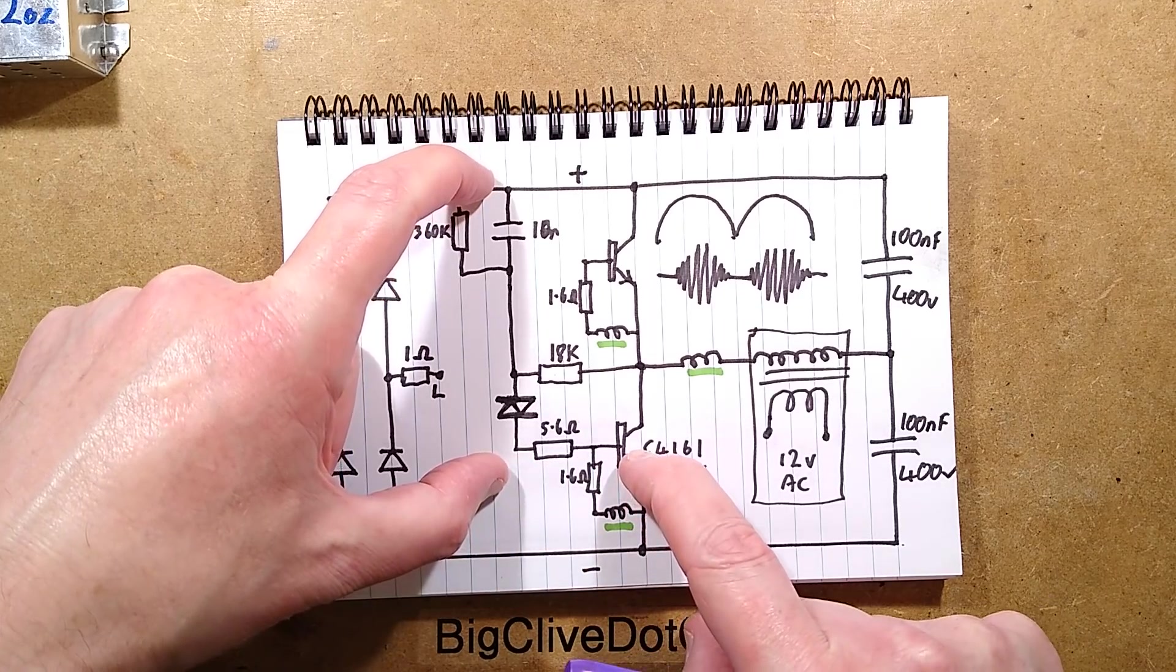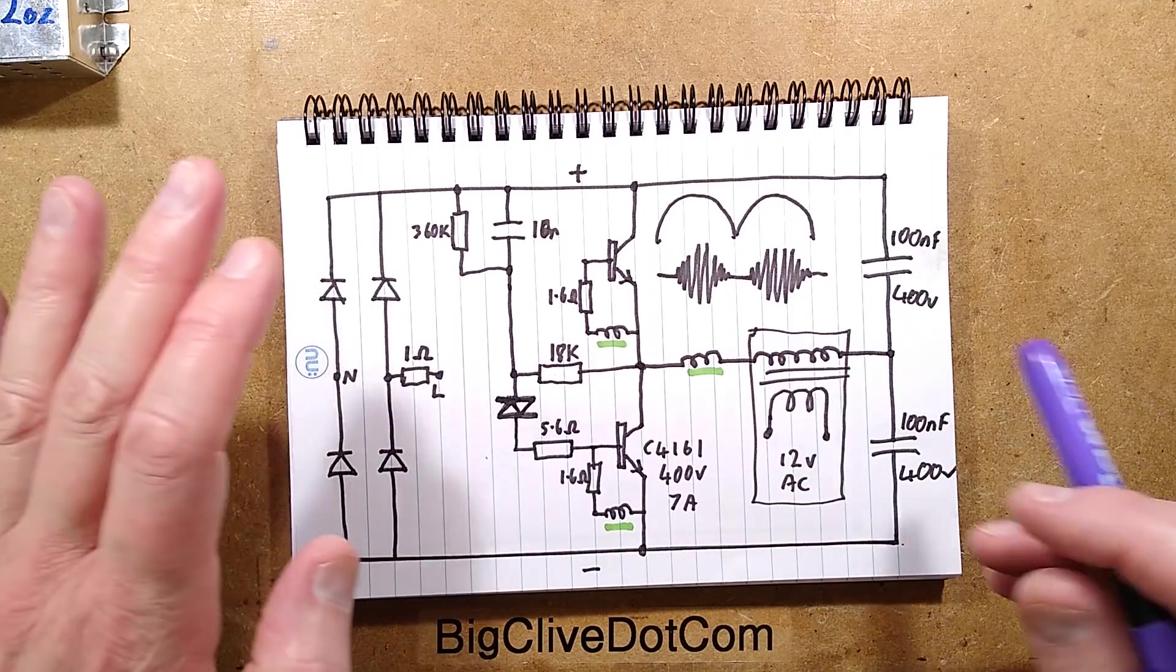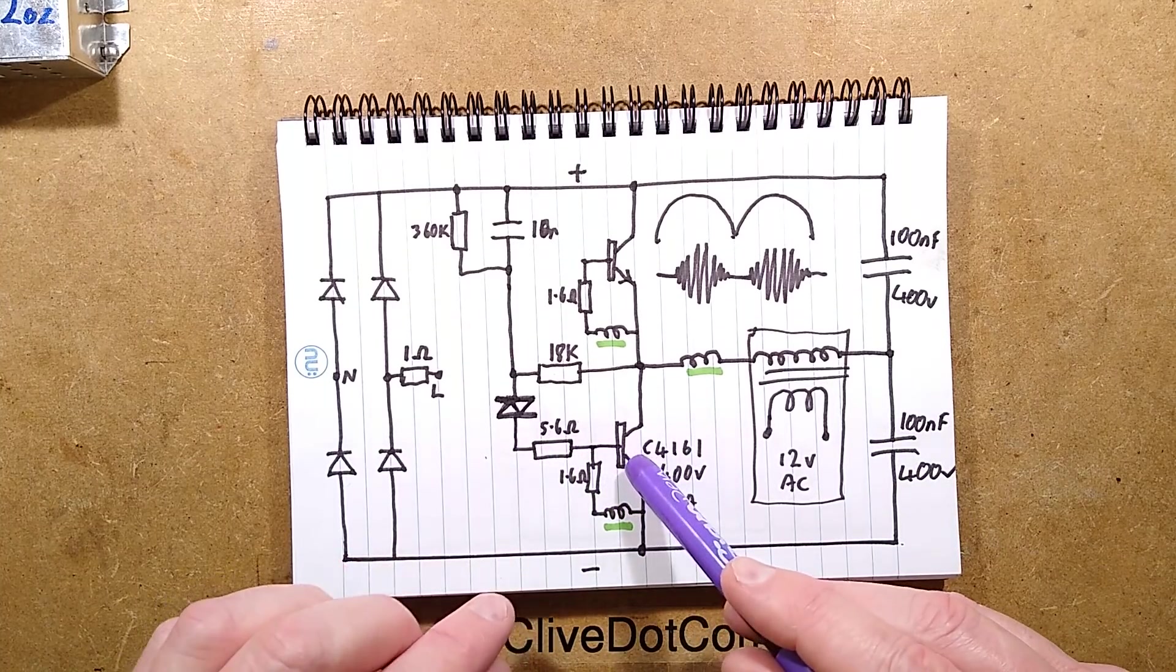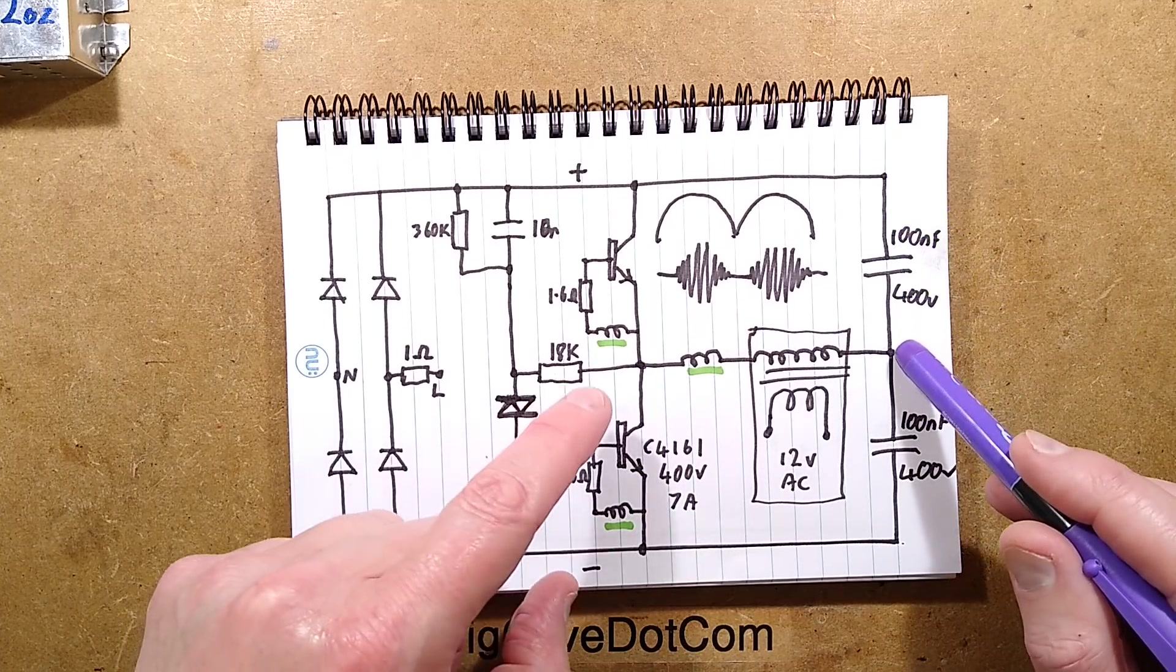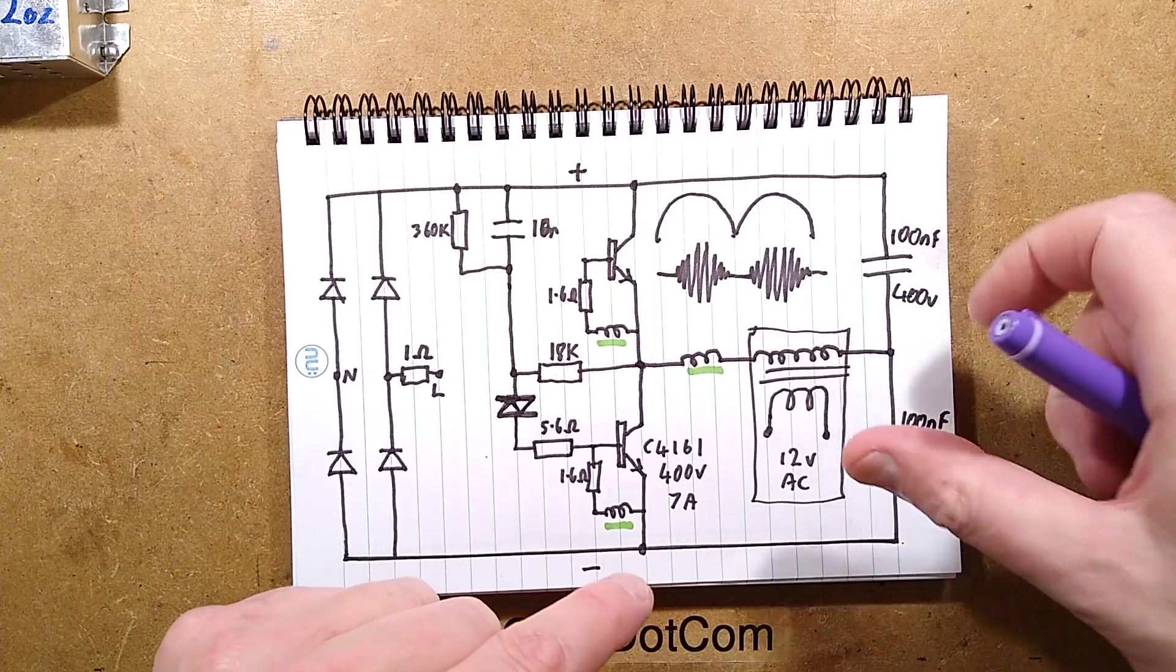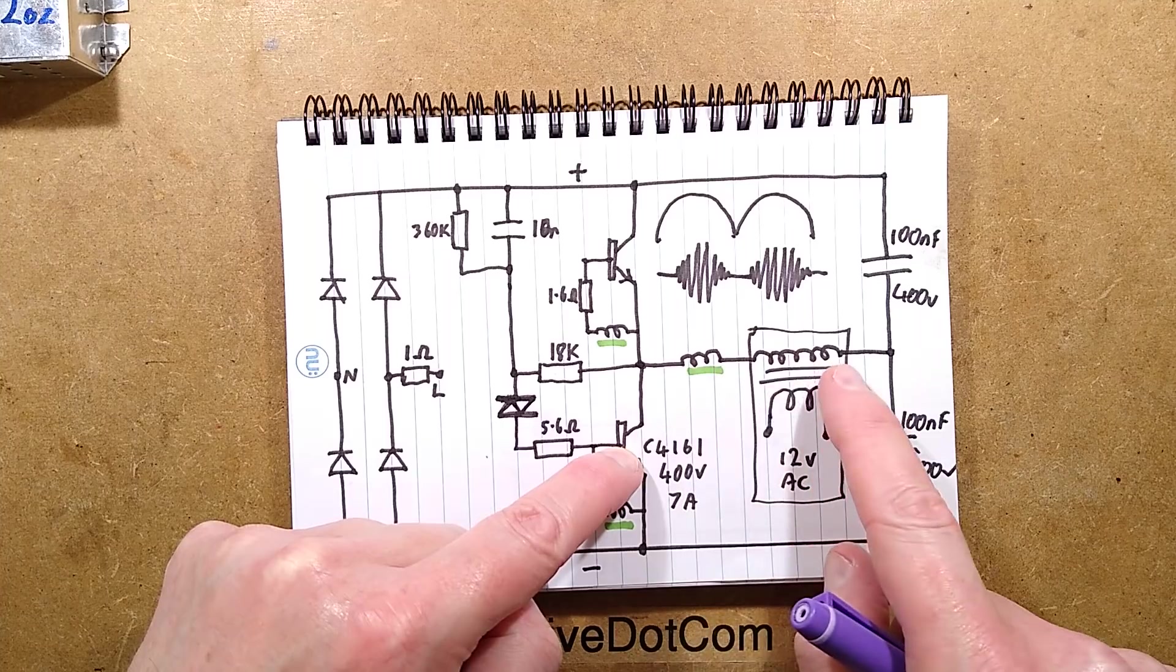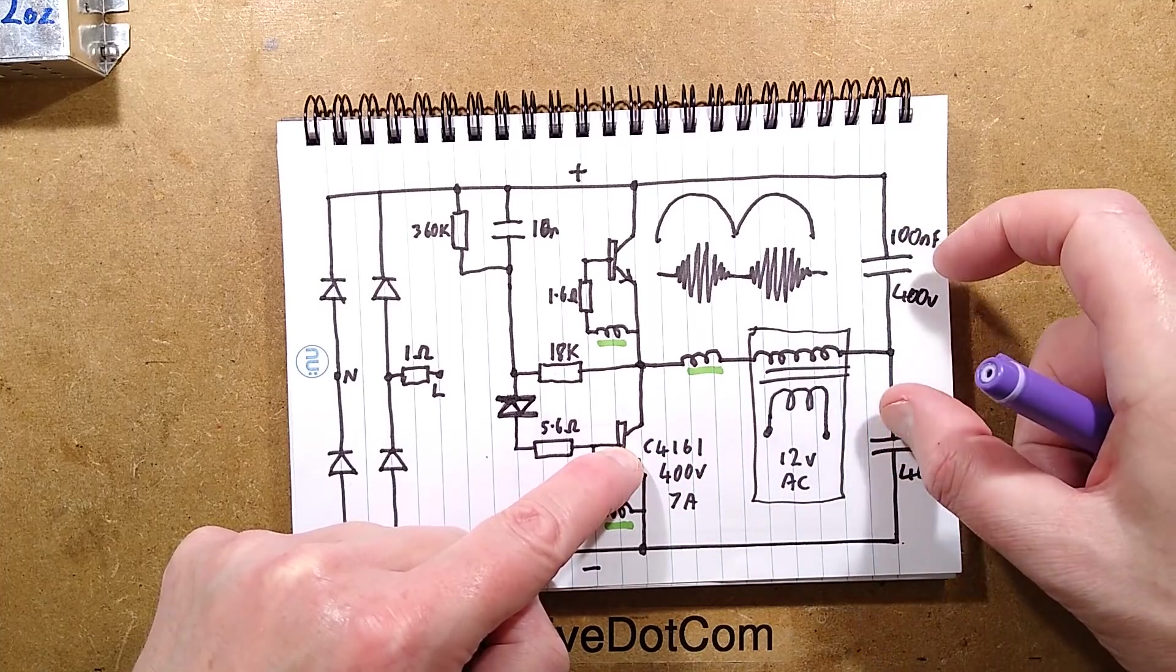So this capacitor here limits the current through the 5.6 ohm resistor and triggers this transistor on. The circuitry is not the normal circuitry, it's got me perplexed here. But that provides a little pulse to this transistor and that transistor starts conducting. Current flows via either charging or discharging one of these capacitors alternatively in each half.